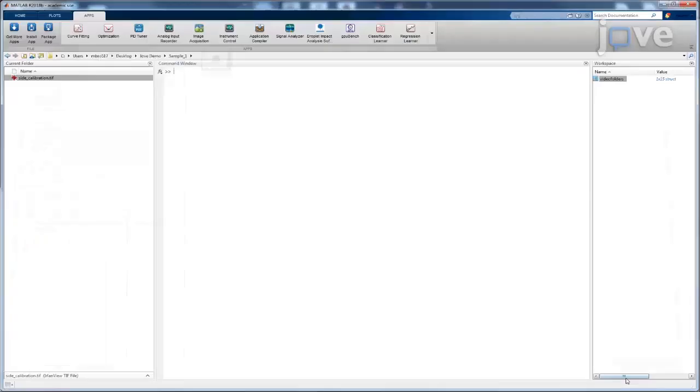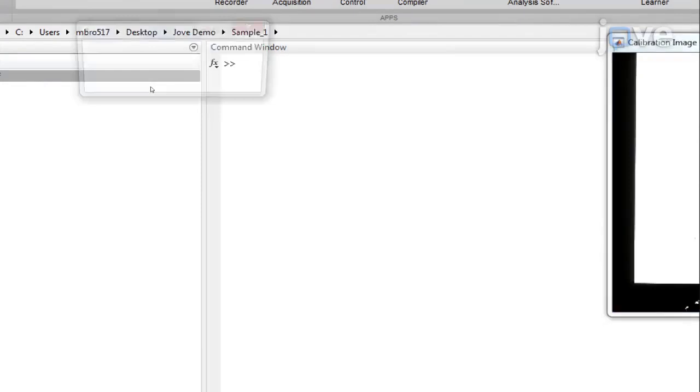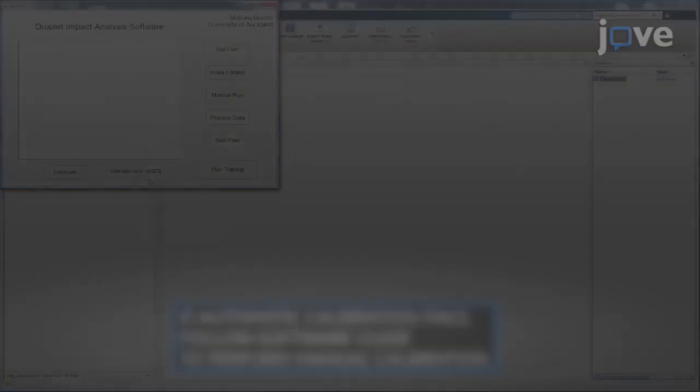Move the rectangle until the calibration square is the only object within the rectangle and click OK. The software will automatically calculate the conversion factor.